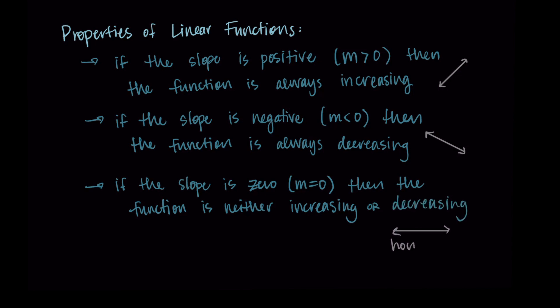This would be our horizontal line. So from this, we can conclude that linear functions don't have any local maximums or local minimums, because we would have to change from increasing to decreasing or decreasing to increasing in order for this to happen.